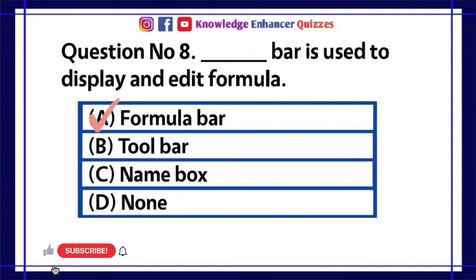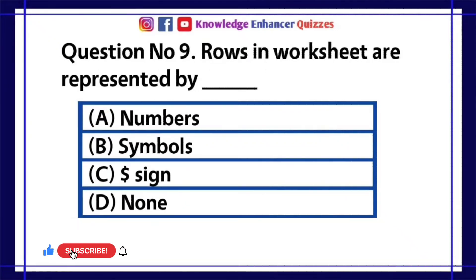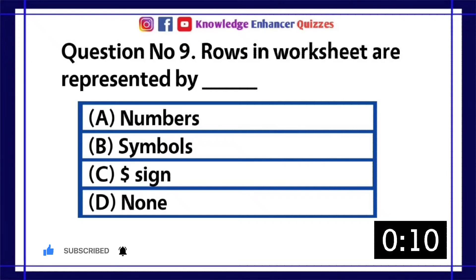Option A is the right answer. Question number 9: Rows in worksheet are represented by — A. Numbers, B. Symbols, C. Dollar sign, D. None.